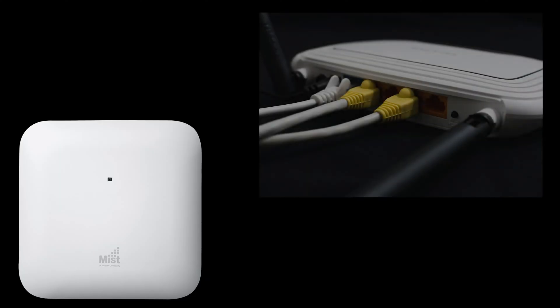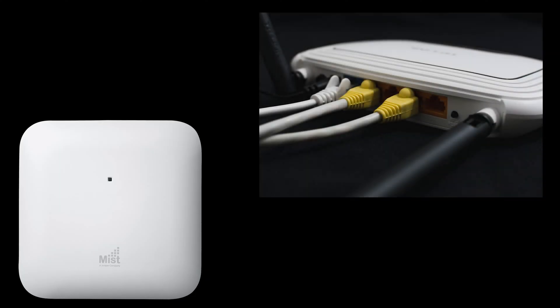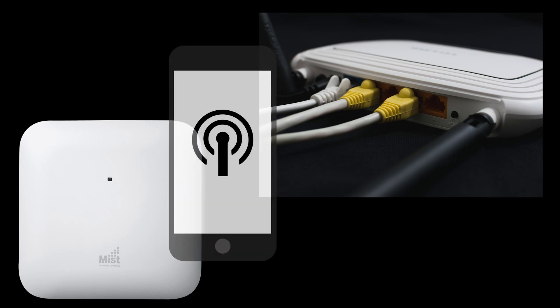A Wi-Fi network will usually have one or more wireless access points for wireless devices to connect to. You probably have one at home built into your internet router. Wireless devices have a wireless network card built in — a tiny little chip that lets your phone talk to the access point using radio waves.